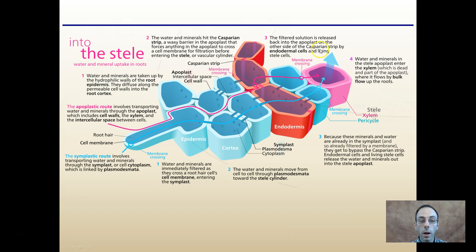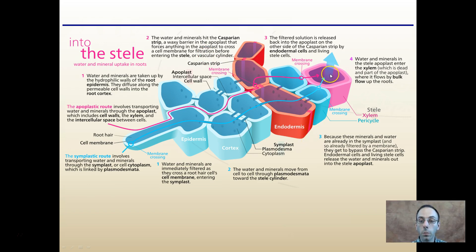To recap quickly: the symplastic pathway goes through the cytoplasm, and the apoplastic pathway goes along the cell walls. The Casparian strip is that waxy barrier, particularly relevant to the apoplastic pathway, allowing filtration before water and minerals enter the xylem.